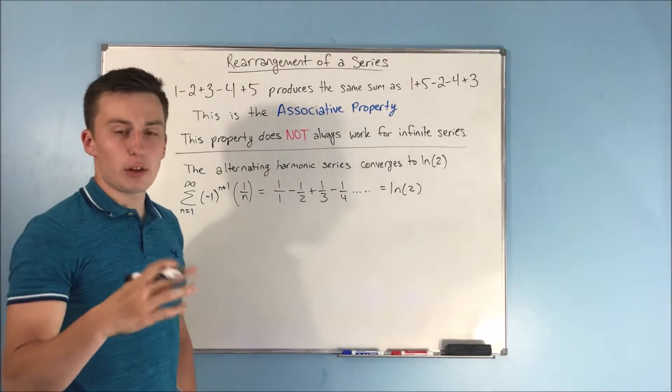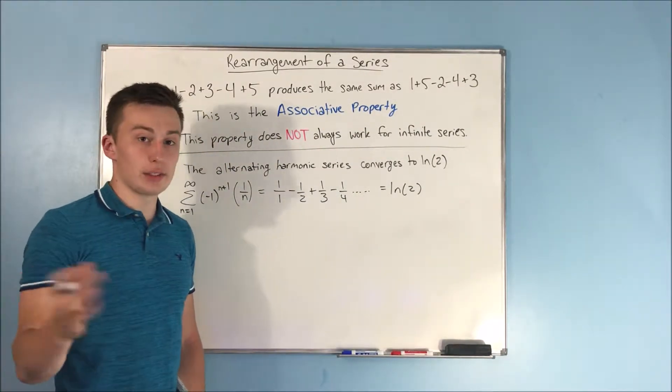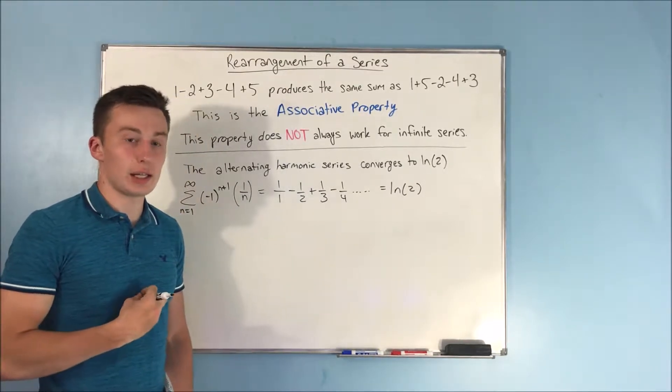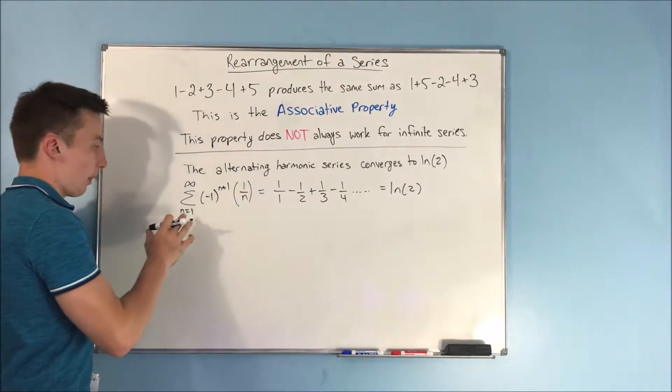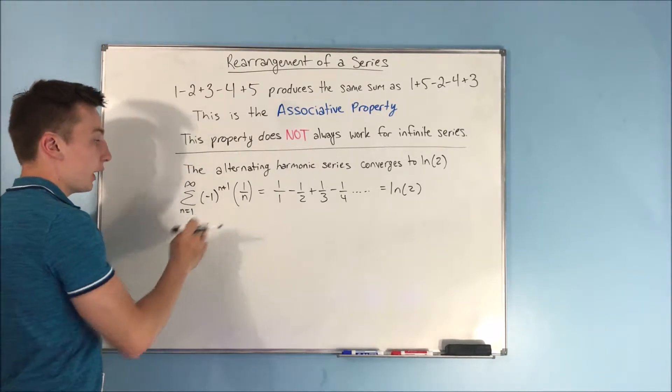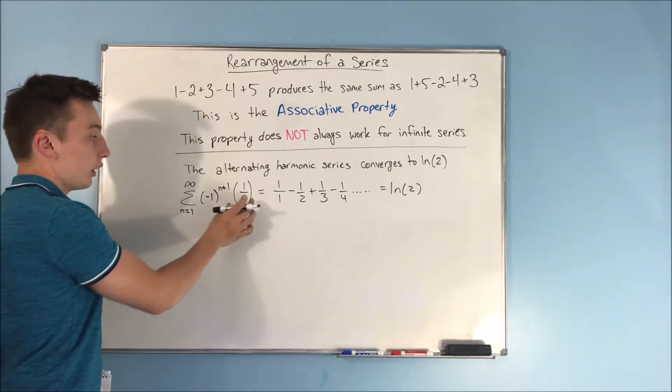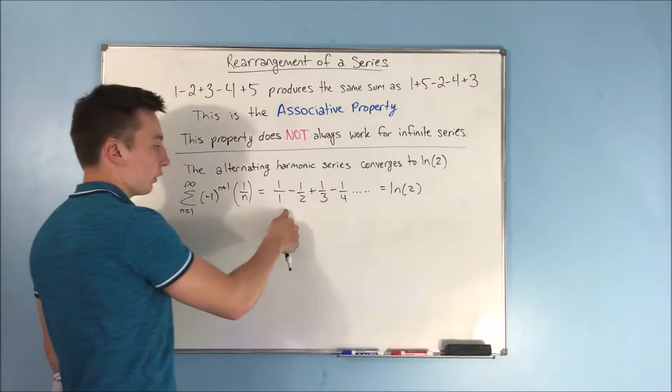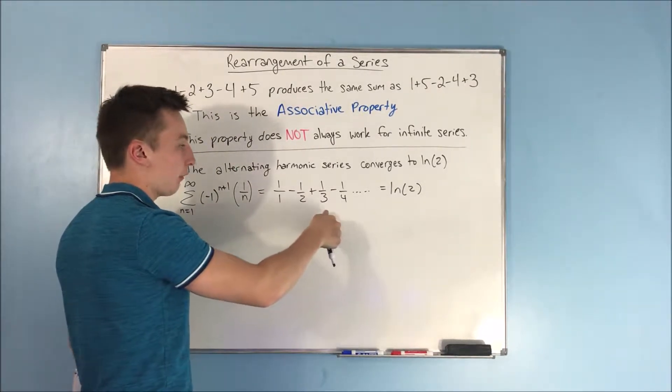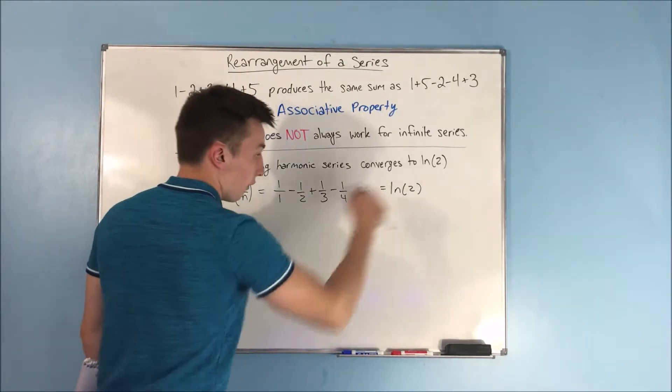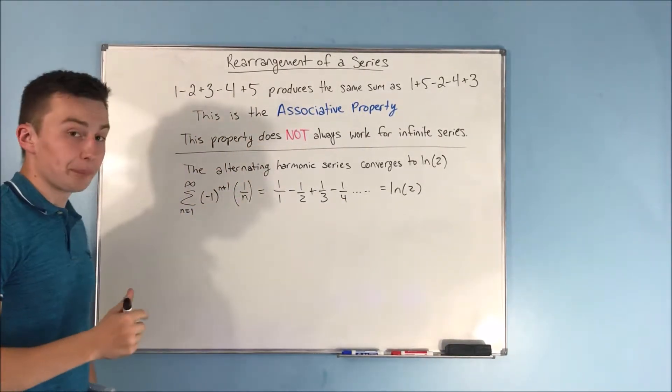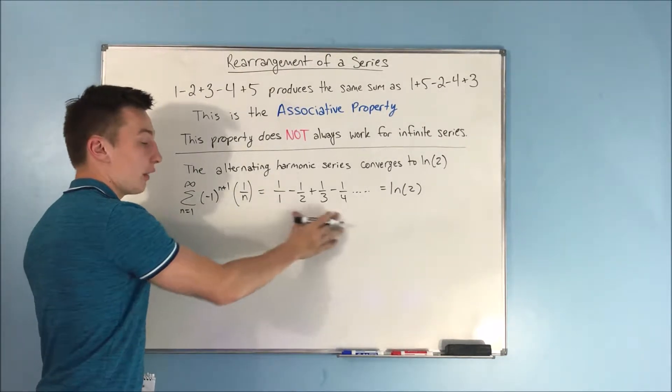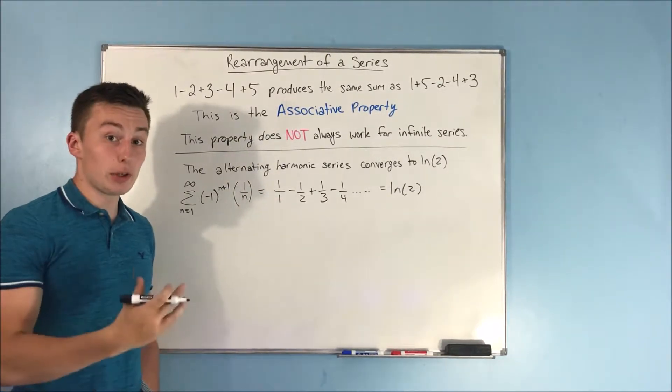You may have heard that before in one of the calculus 2 lectures that you have to sit through if you're taking a calculus 2 class. So the sum from n equals 1 to infinity of negative 1 to the n plus 1 times 1 over n. That's the alternating harmonic series. We know that goes like 1 minus 1 half plus 1 third minus 1 fourth. And that ends up equaling natural log of 2. The crazy thing is that we can actually rearrange the terms of this series to produce a different sum.